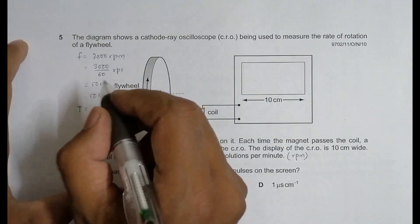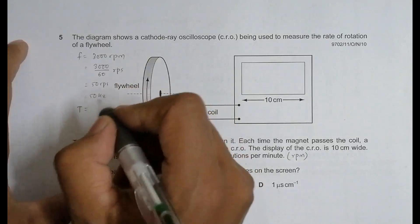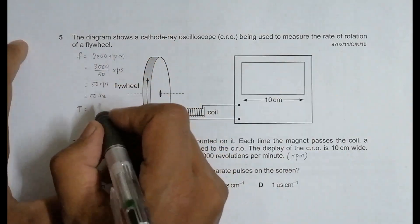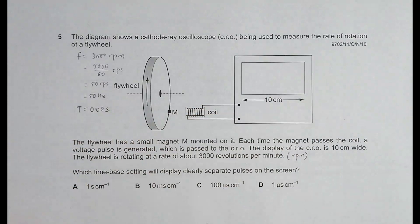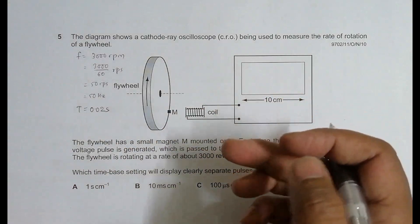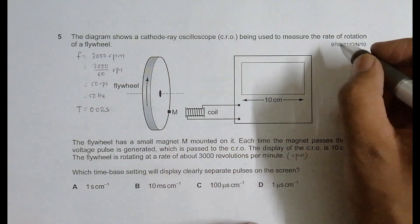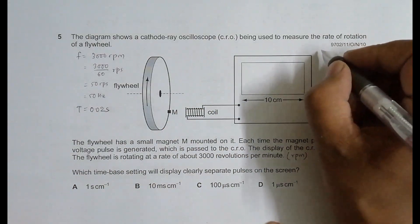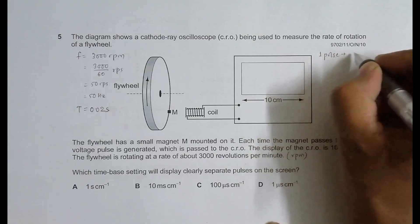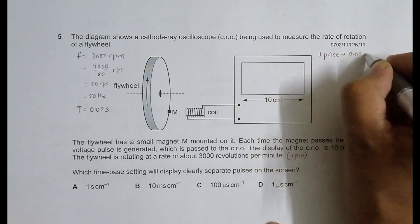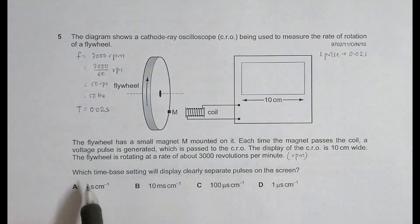That means the time period T equals 0.02 seconds. So every 0.02 seconds the pulse will repeat. The time separation from one pulse to another pulse will be 0.02 seconds. Let me write here: the time from one pulse to the next is 0.02 seconds.